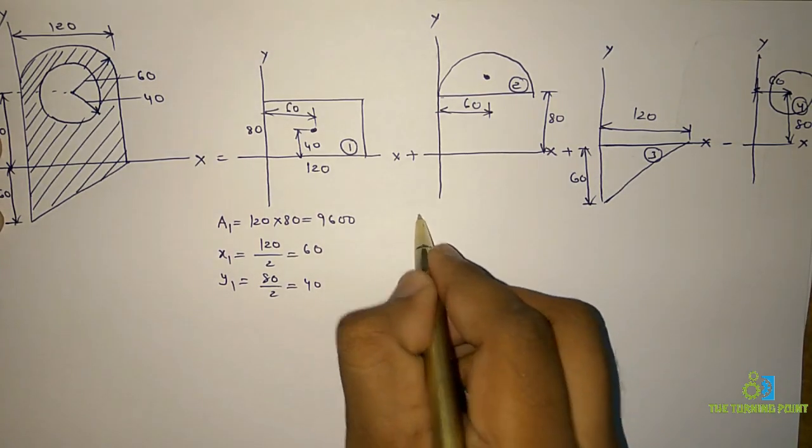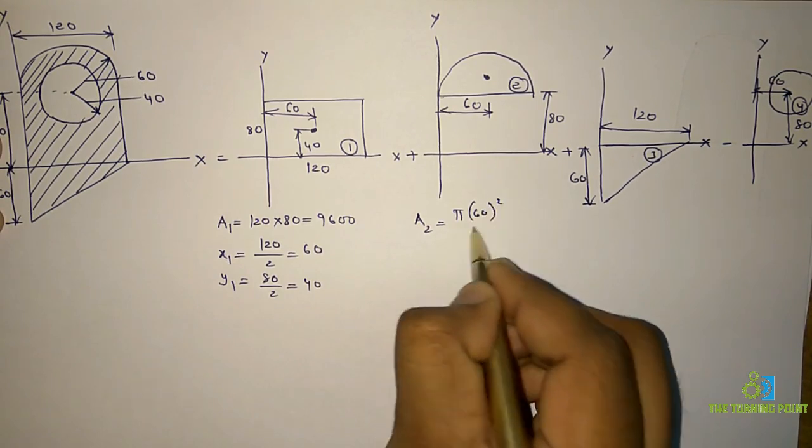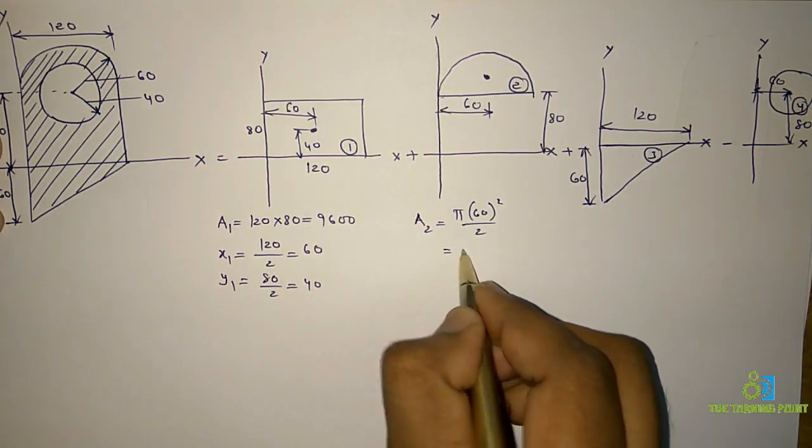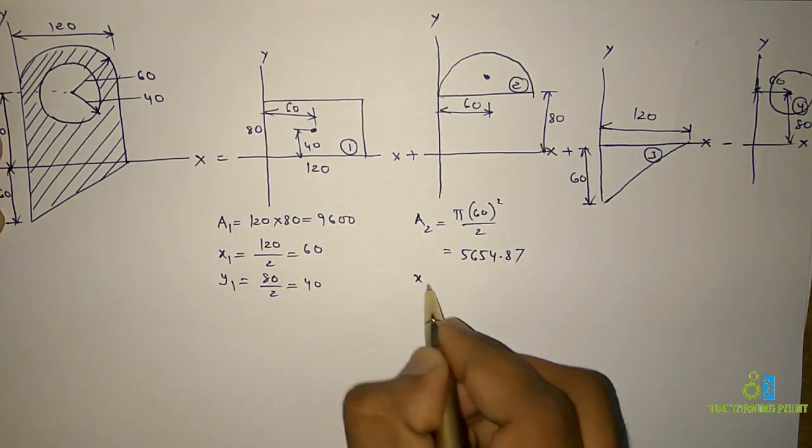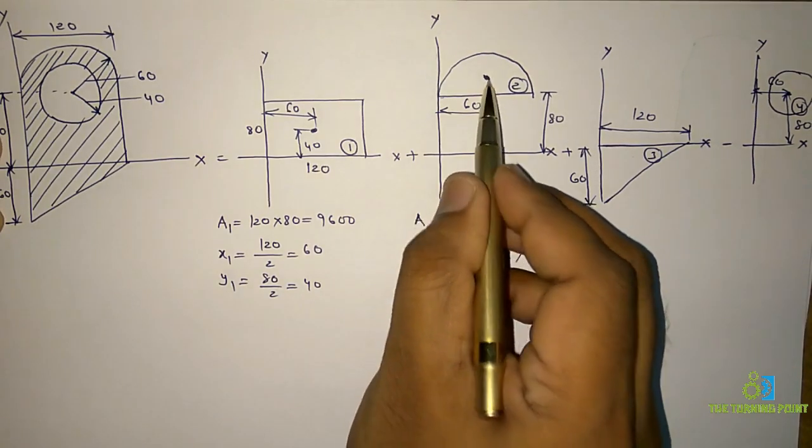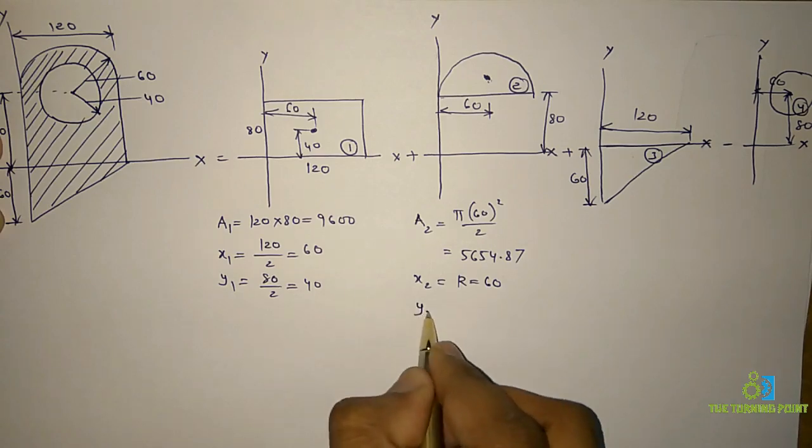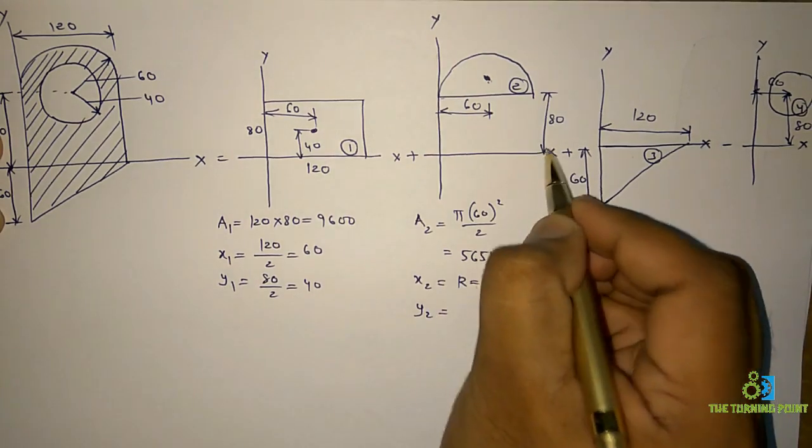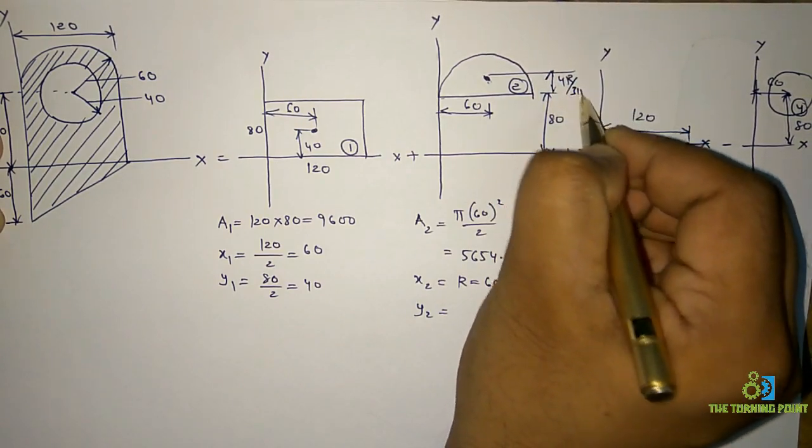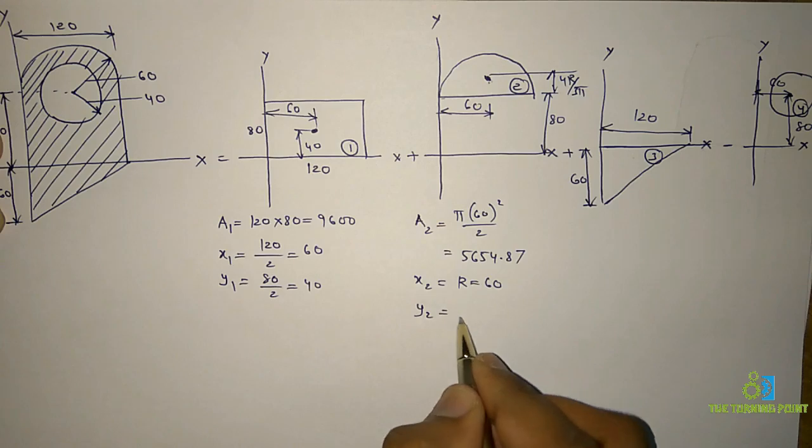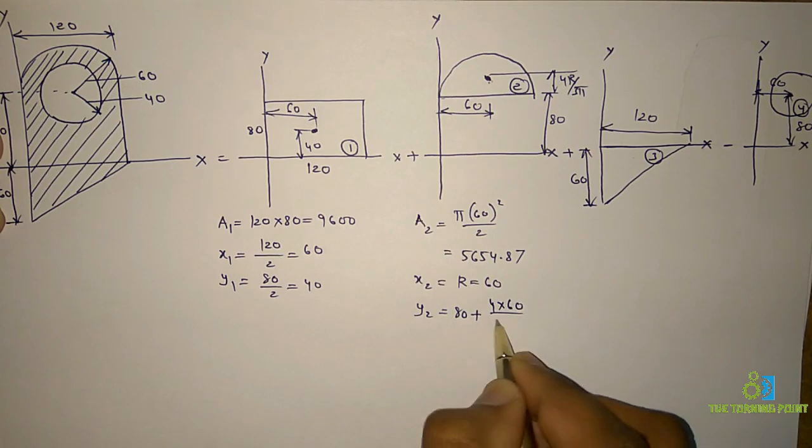For the semicircle, area A2 is π times 60 squared divided by 2, which equals 5654.87. x2 is the perpendicular distance to the y-axis, which equals the radius, 60. y2 uses the formula 4r/3π, so y2 equals 80 plus 4 times 60 divided by 3π, which equals 105.46.